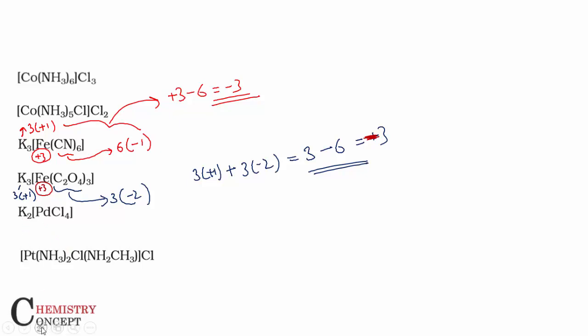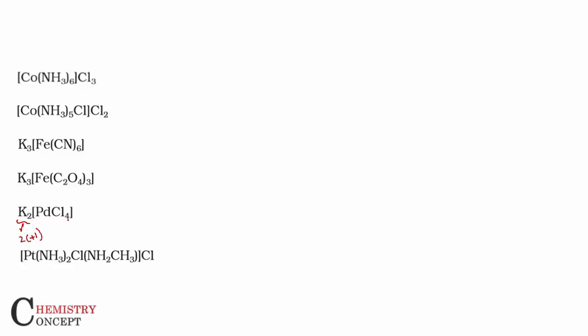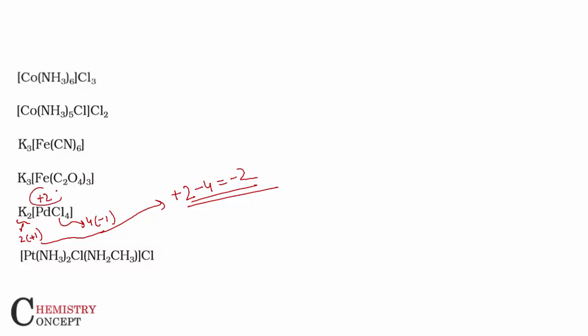For the next compound, we have two potassium ions at plus one each, and four chlorine ligands each at minus one. The net charge is plus two minus four, which comes out to minus two. The iron charge is the opposite of minus two, so iron is in the +2 oxidation state.